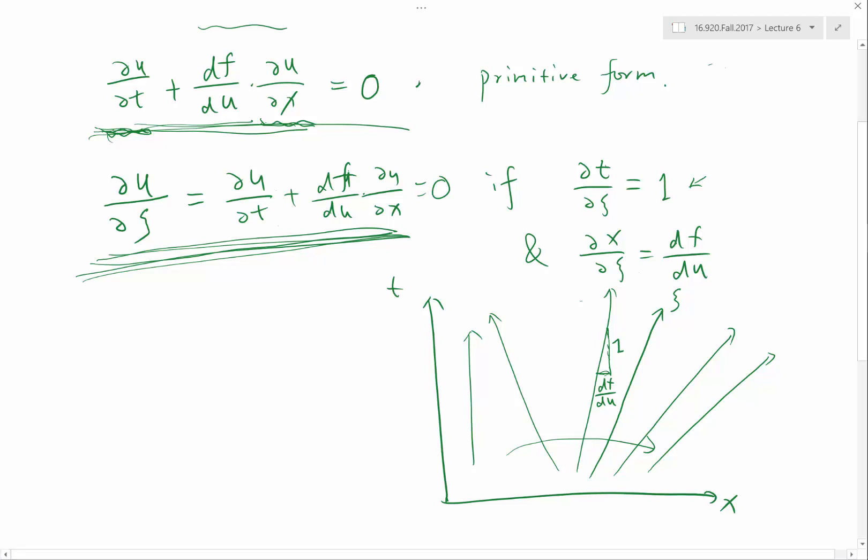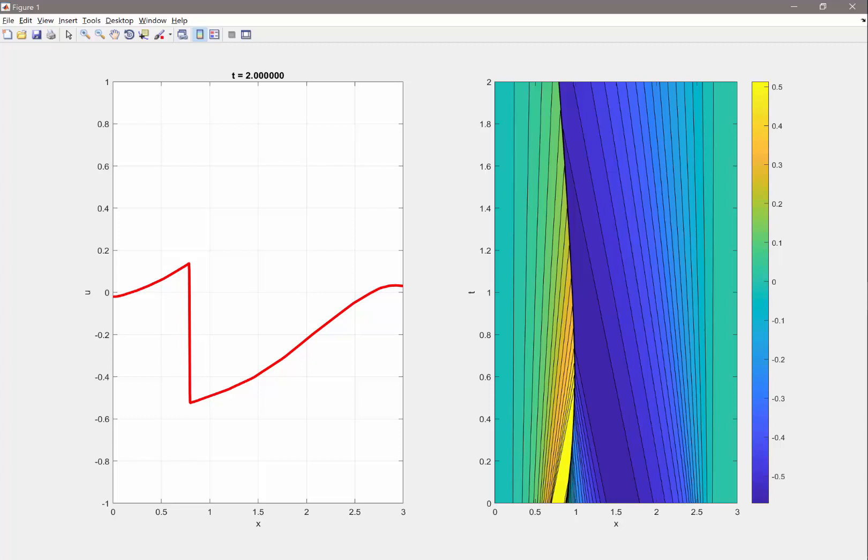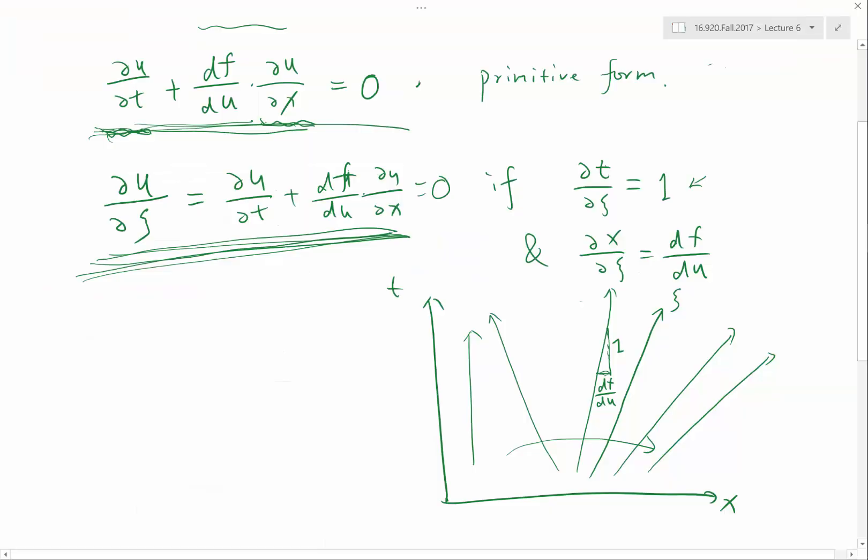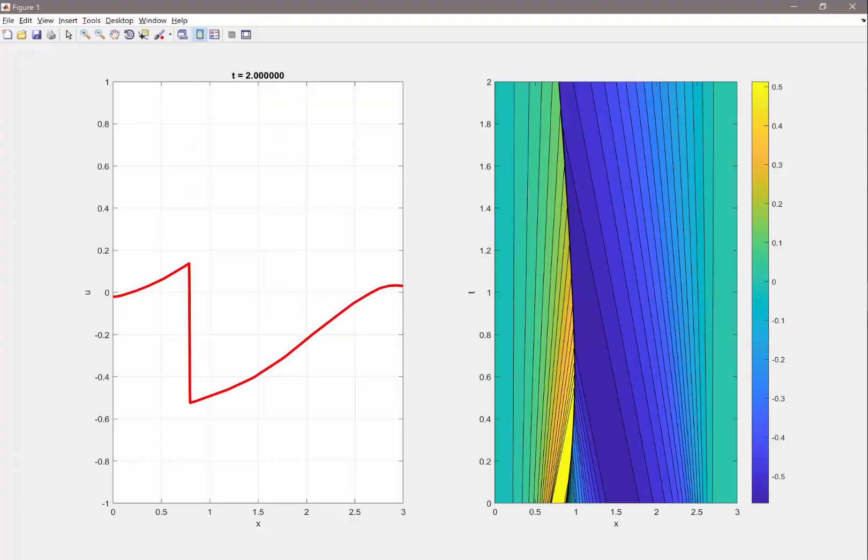So if du/dc is equal to zero, I mean partial u partial c. By the definition of the partial derivative, as we keep the other coordinate unchanged and only change the c coordinate, by the way the other coordinate is which line you are on, so if we keep the same characteristic line and move upwards along the c direction, we should expect the solution to be constant because partial u partial c to be zero. And this is the reason why we can visualize these characteristic lines as contour lines in the spacetime plot.